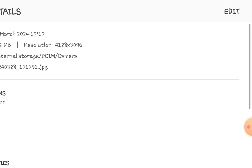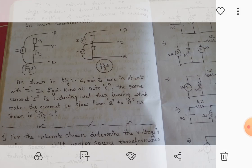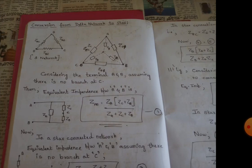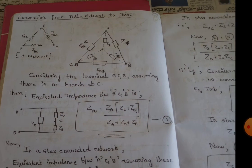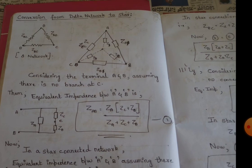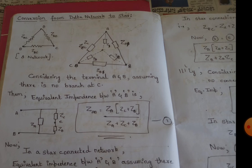We have another concept which is the conversion of a delta network to star. In a delta connection, three resistances are connected in a triangle form. What we need to do is split that and rewrite it in star form. For that, we have a formula.